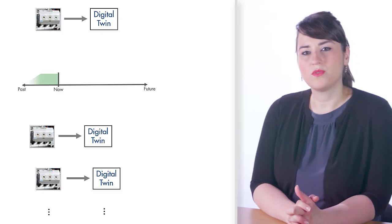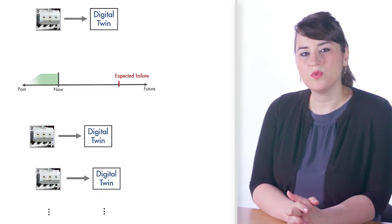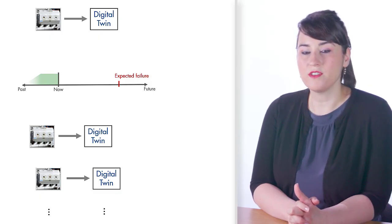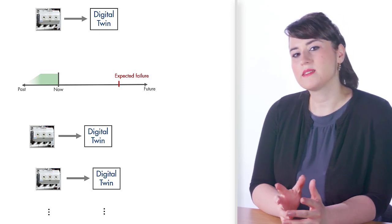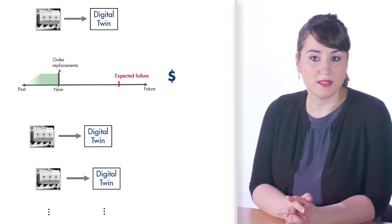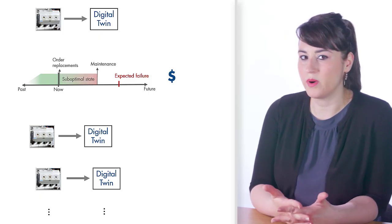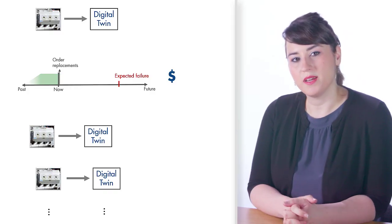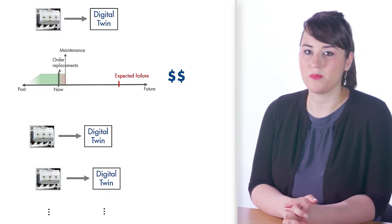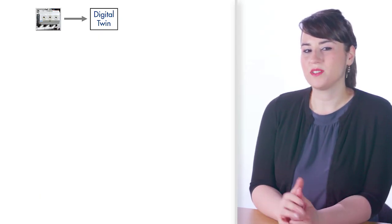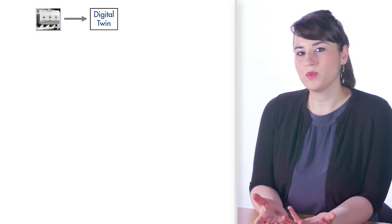Imagine a situation where one of the pumps is expected to fail soon. Using digital twins, you can assess how this will affect the efficiency of the fleet and what it will cost you. Based on this analysis, you can either order replacements and run your pump in a suboptimal state until you get the new parts, or you can pay more for shipping and get the parts immediately to schedule maintenance as soon as possible. Digital twins not only help you understand the history of their assets, but they also help you with future planning.